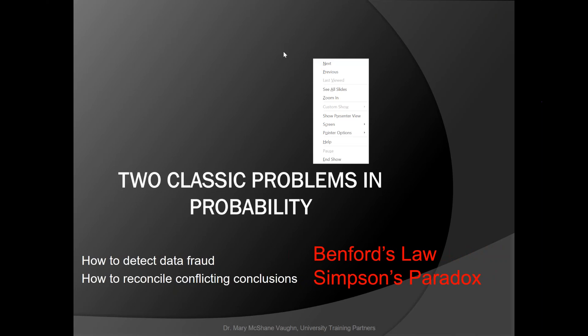It's going. Now everybody sees that Benford's Law and Simpson's Paradox has jumped up? Good. So, getting back to my thing — how to detect data fraud, we use something called Benford's Law, and the other is how to reconcile conflicting conclusions, which is Simpson's Paradox. These are the two things we're going to be talking about today.